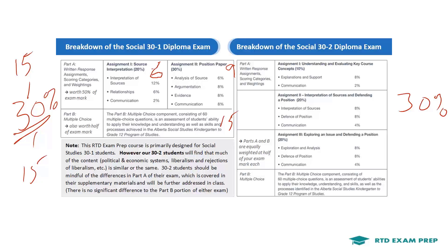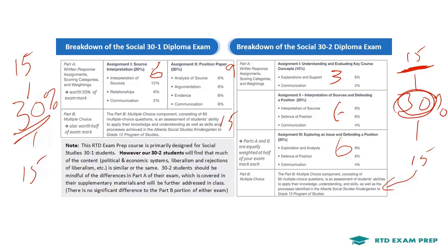On the 30-2 side, it's very similar in that the written component is 15 marks and the multiple choice is 15 marks. The biggest difference is that for Part A of your exam you will have to complete three assignments: Assignment 1, Assignment 2, and Assignment 3. Assignment 1 is worth the least — only 3 marks out of the 15 written marks. Assignments 2 and 3 are each worth 6 marks. The remaining 15 marks come from multiple choice to make up the total 30 marks for the diploma exam.